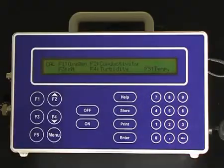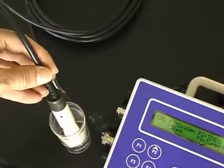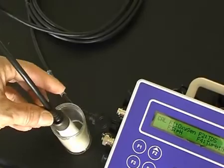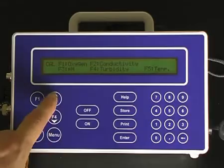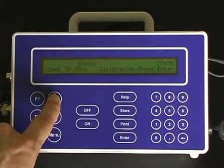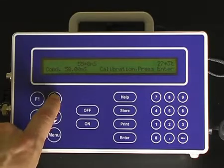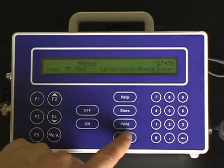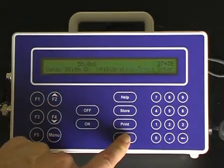For the second point calibration, ensure that the sensor is submersed past the vent hole in the solution. Press F2 for conductivity. Once the sensor has equilibrated, press the Enter button to complete the second point calibration.